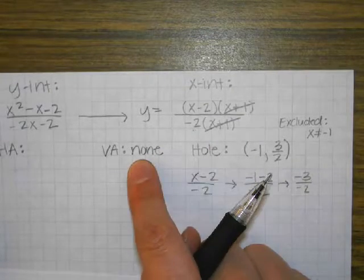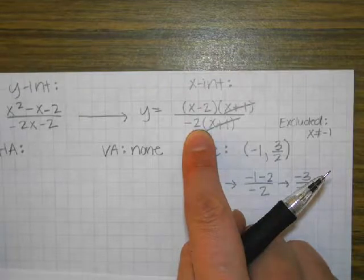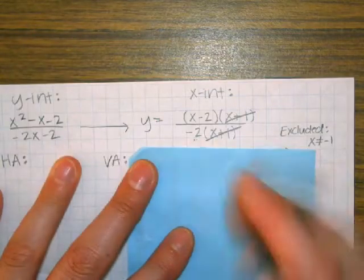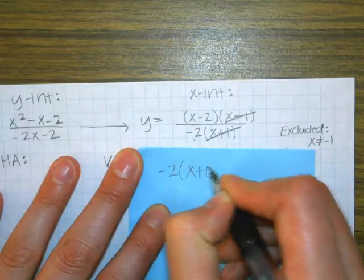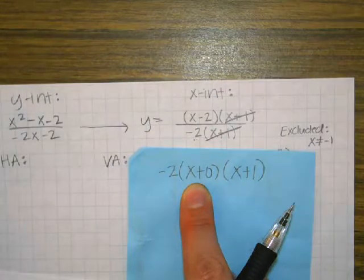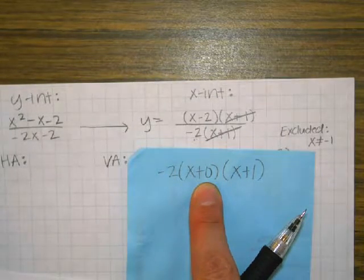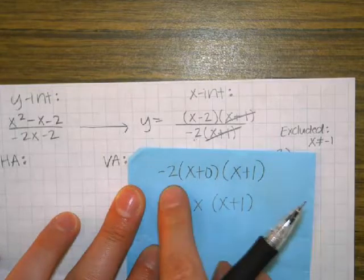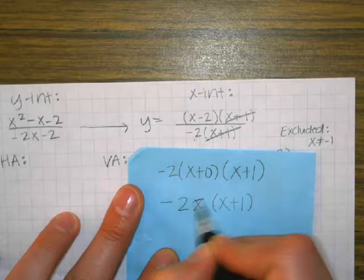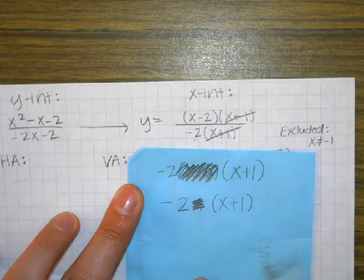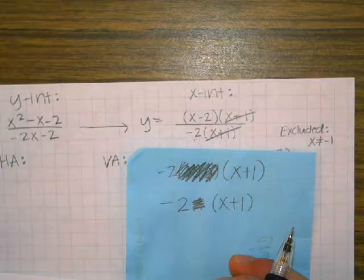For you to have a vertical asymptote where you say X equals 0, there would have had to be an X with this negative 2. So if we look at a factor, you'd have to be able to rewrite the problem like negative 2 times X plus 0 times X plus 1 — then this could give you a vertical asymptote of just plain old X. But if the problem's written as negative 2X times X plus 1, you can rewrite it that way. But if there's no X there, then we can't think of it this way, and that's why the answer is none instead of 0, because there's no X there to be 0.